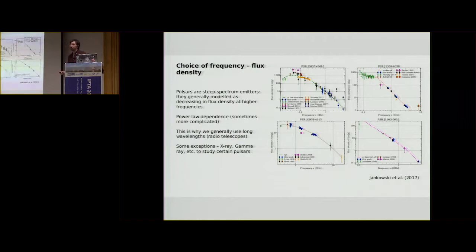So getting back to the choice of frequency, why do we actually use radio wavelengths? There are a couple of reasons. And the first is the flux density of pulsars. So pulsars are steep spectrum emitters, which means that they usually follow some kind of power law, something resembling a power law or maybe a broken power law, where the flux density rapidly drops off as you go to higher and higher frequencies.